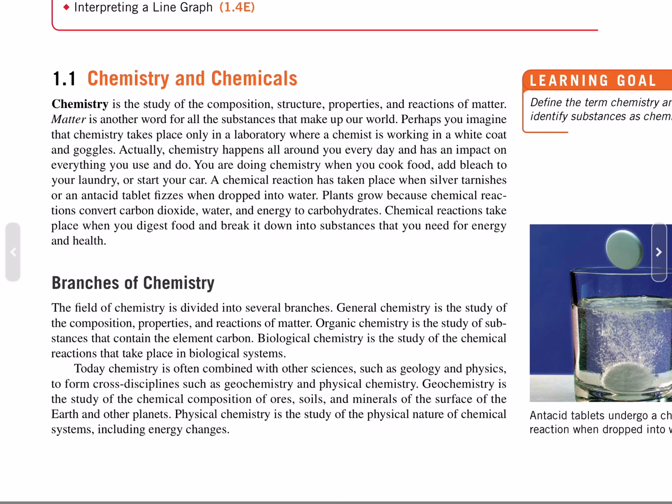Branches of Chemistry: The field of chemistry is divided into several branches. General chemistry is the study of the composition, properties, and reactions of matter. Organic chemistry is the study of substances that contain the element carbon. Biological chemistry is the study of the chemical reactions that take place in biological systems.